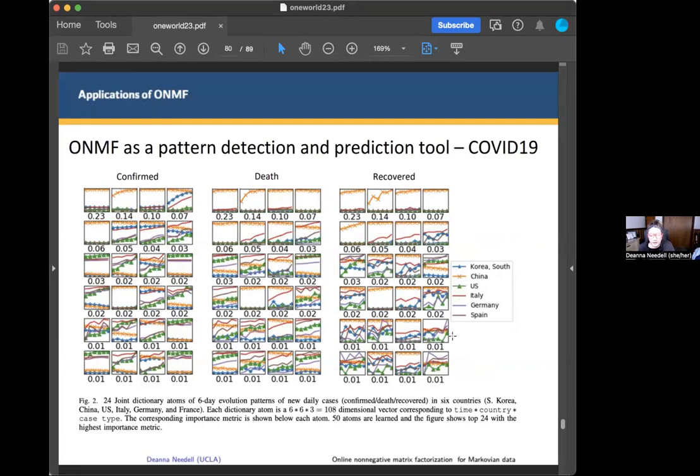There are some interesting things that you note. For example, China here is in this orange. China seems to be a lot different in most of these building blocks to the other countries. That's not surprising. Early 2020, they had a lot of different case count information than the other countries. That makes sense.